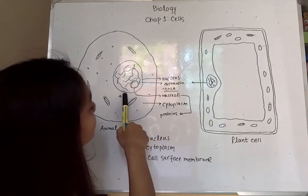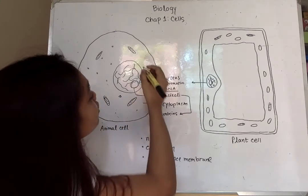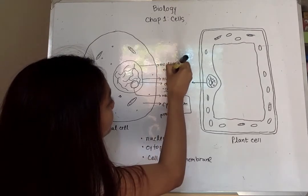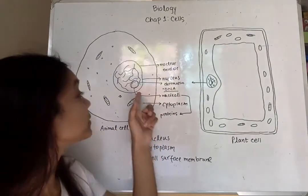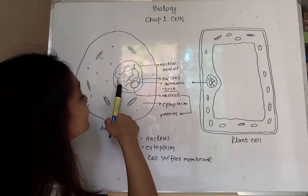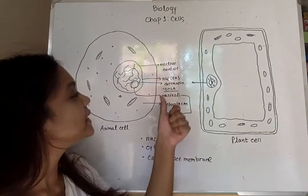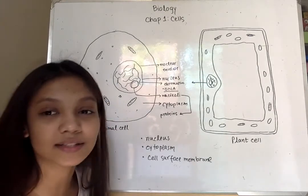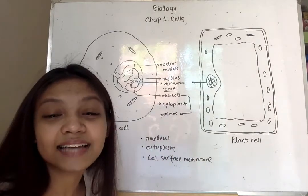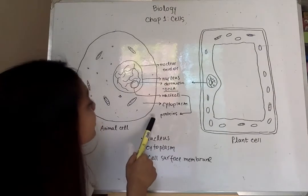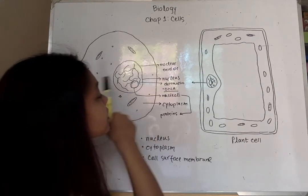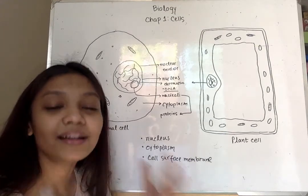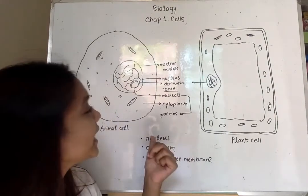So to recap: inside an animal and a plant cell we find a nucleus. The outer boundary is called the nuclear membrane or nuclear envelope, and it separates the nuclear content from the surrounding cytoplasm. Inside we have thread-like structures called chromatin which contain DNA — the hereditary materials inherited from our parents that control everything happening inside our cells. We also have the spherical structure called the nucleolus, which helps in the building up of proteins.